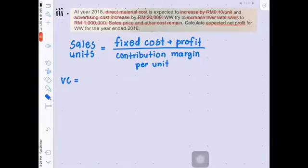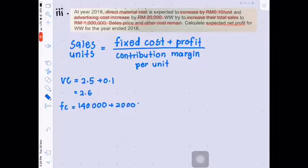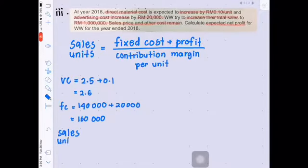New variable cost is when you add the first variable cost with the additional 10 cents, then you will get RM2.60 per unit. Whereas, new total fixed cost is when you add the first RM140,000 with additional RM20,000, then you will get RM160,000.